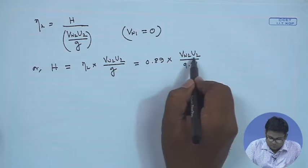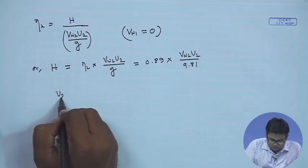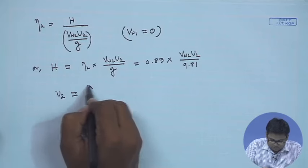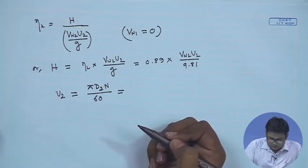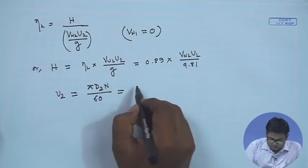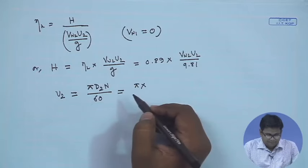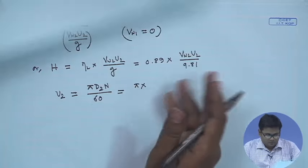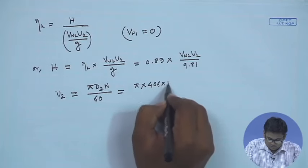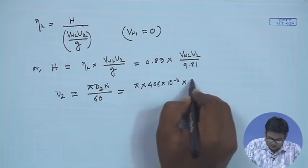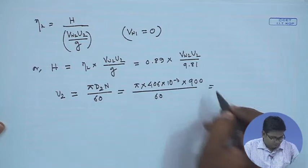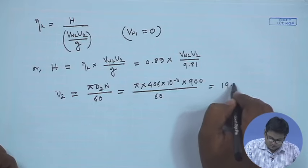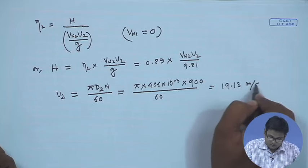Determination of u2 is straightforward: u2 = π × d2 × n / 60, where d2 = 406 mm. So u2 = π × 406×10⁻³ × 900/60 = 19.13 m/s.